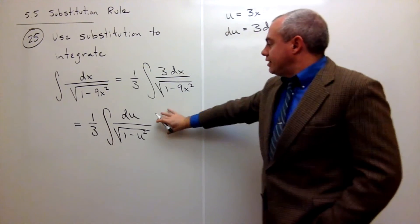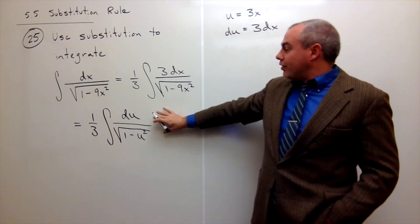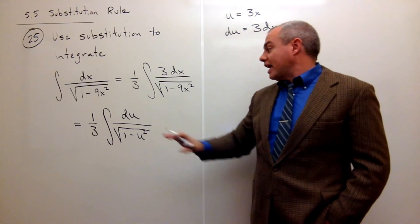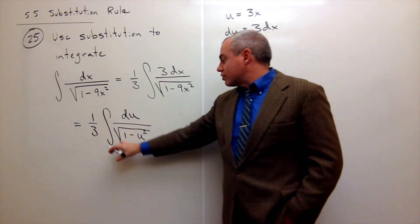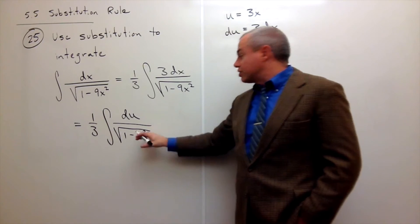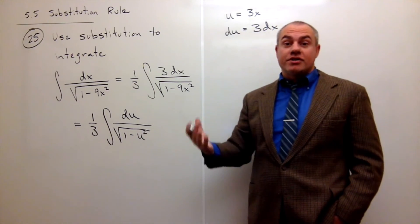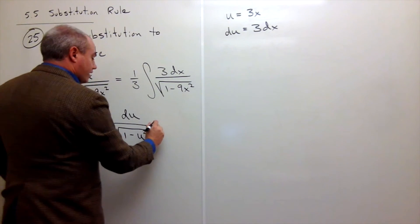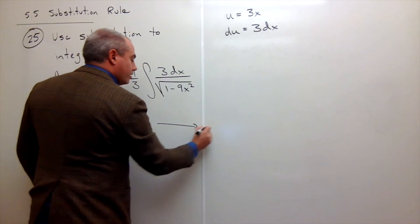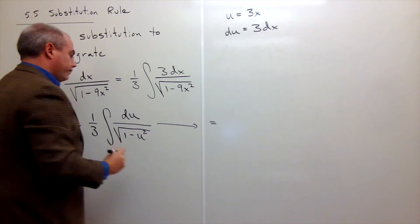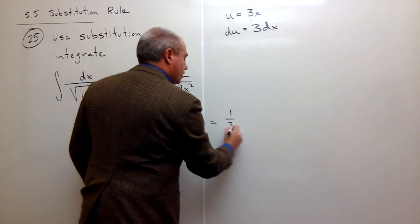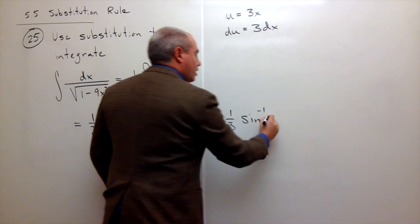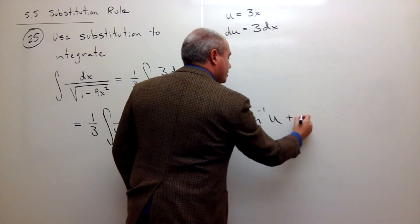So now I have this integral. This is exactly in the form for a sine inverse. So the antiderivative of 1 over square root of 1 minus u squared is just sine inverse of u. So I can rewrite this as one-third of sine inverse of u plus c.